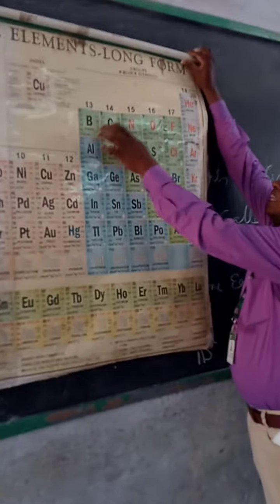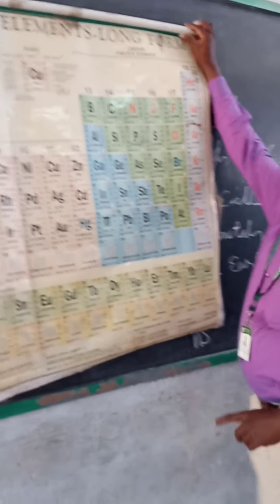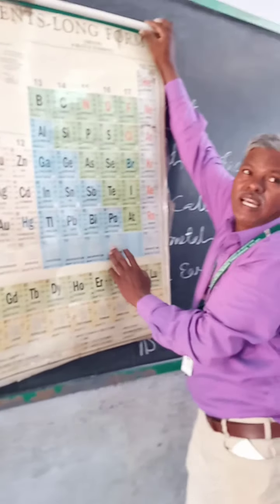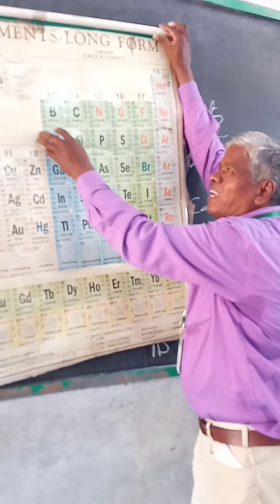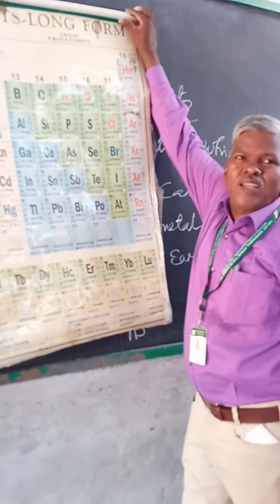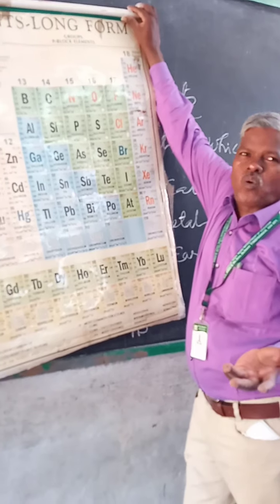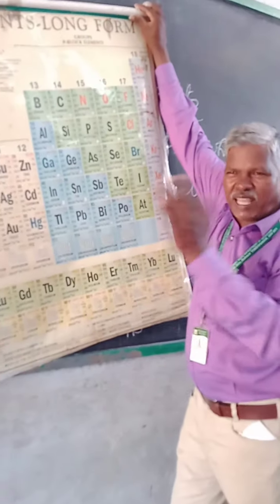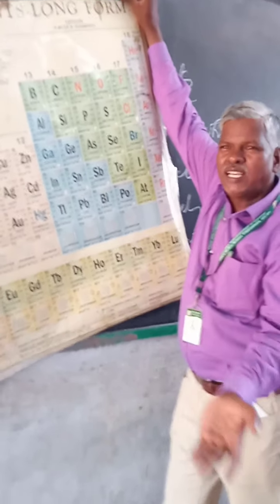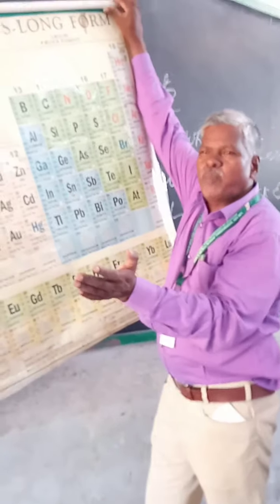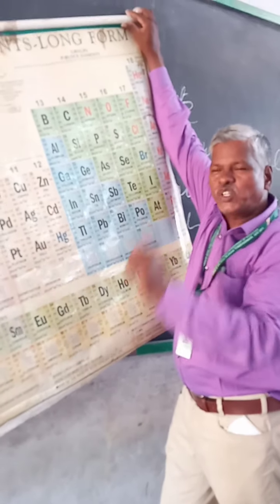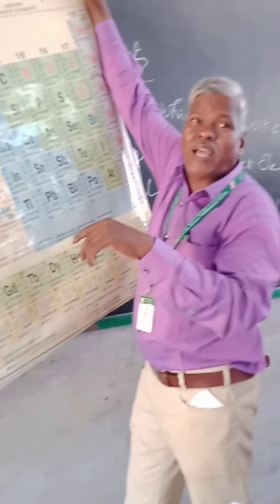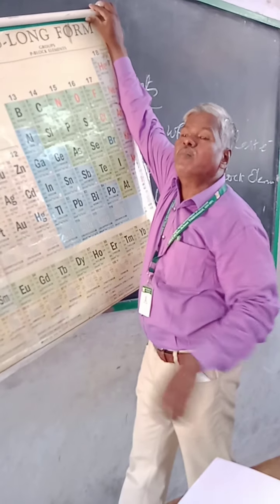Now, looking at the color coding of the periodic table: the blue color represents metals, and there is a borderline region. Elements along this borderline show both metal and non-metal character — these are called metalloids.